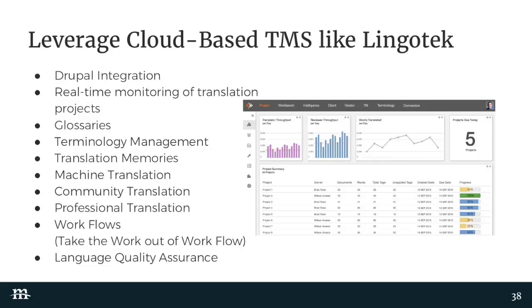Translation memories are previously translated content that you can reuse. Anytime something is translated from English into Spanish, those are saved as a memory and you can reuse them to translate other content or re-translate the same content. In a web environment, if you make a change to a single element, a paragraph, or a sentence, you don't have to re-translate the entire page — you send it to a system that knows what those changes are and tracks them in a change management fashion. That's super important for speed and cost. You also want flexible workflows so different content types and languages can have different workflows.